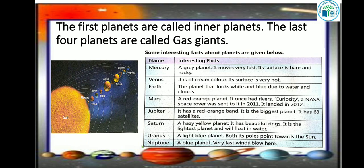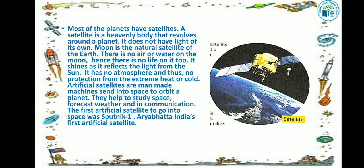Did you know Mercury travels a hundred times faster than a Concorde aircraft? And Jupiter is the fastest spinning planet in our solar system — it spins faster than any other planet.